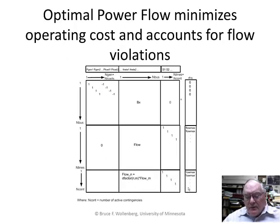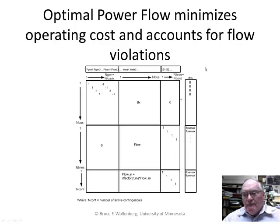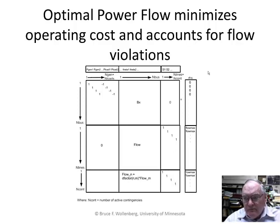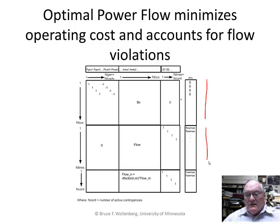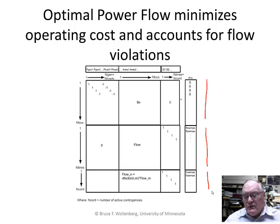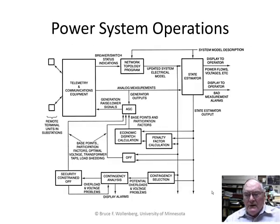Violations must be corrected — usually by changing the pattern of generation, going off of pure economic dispatch — and must be corrected in real time, as fast as possible. The economic dispatch must also account for transmission losses; for electrical engineers, these are the I-squared-R losses that cause lines to heat up. We can't eliminate all losses, but we can minimize their economic effect. This leads to the optimal power flow, and we cover in the text how to build an optimal power flow that models the power system, accounts for all flows in the network so that none of them overload, and includes constraints representing first contingency flows — called a security constrained optimal power flow.